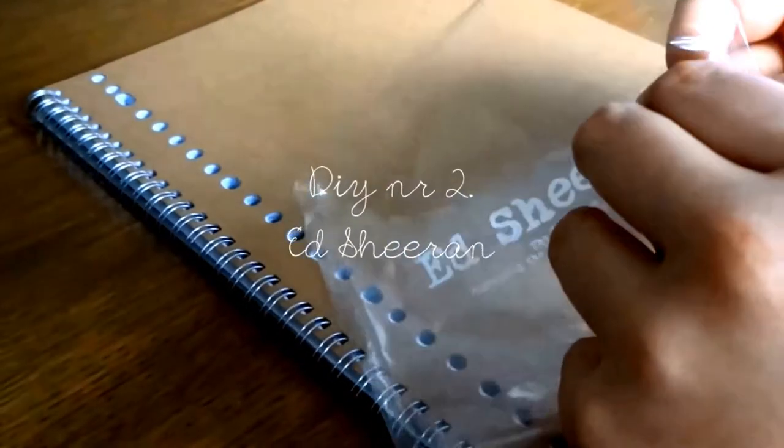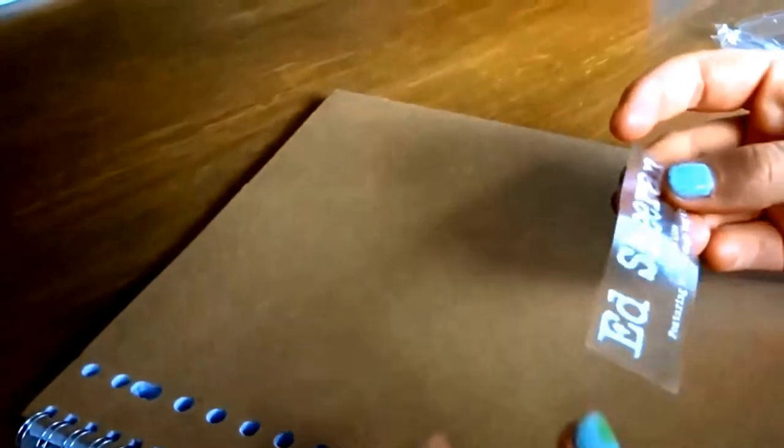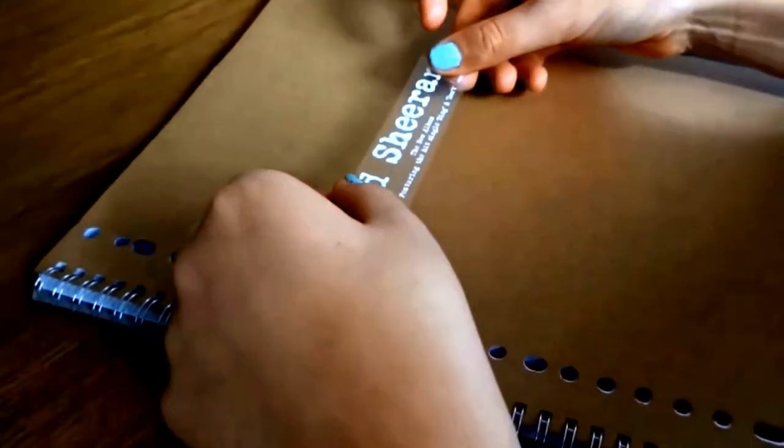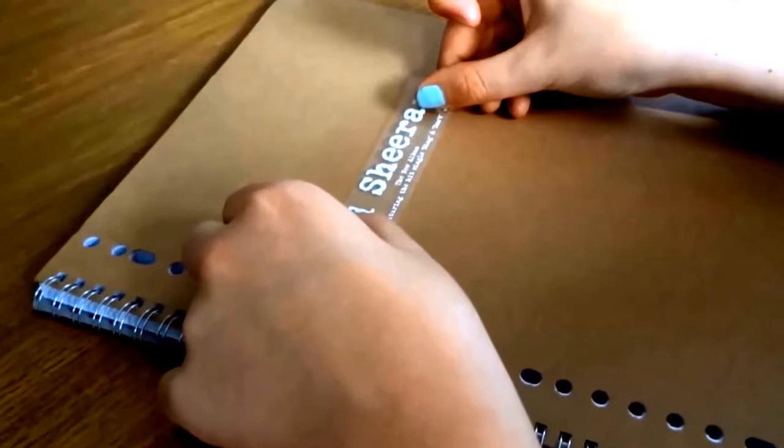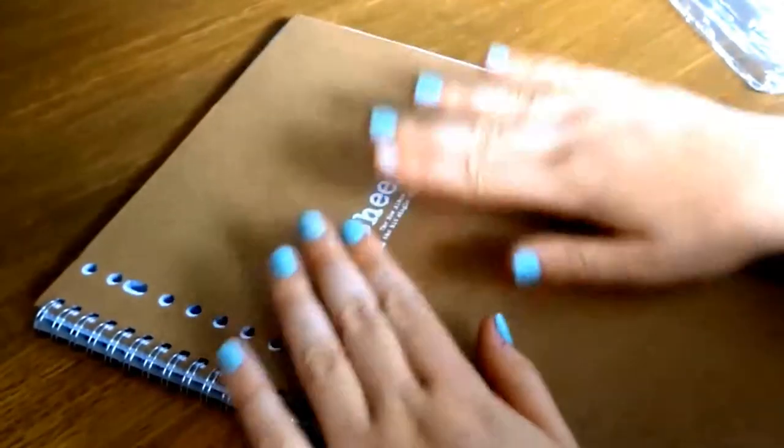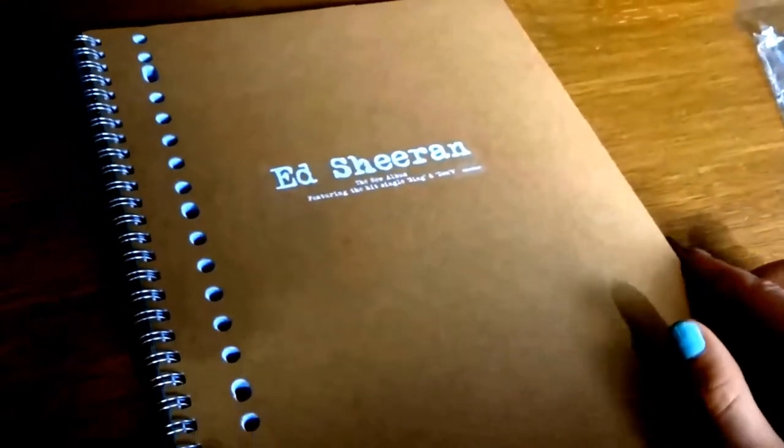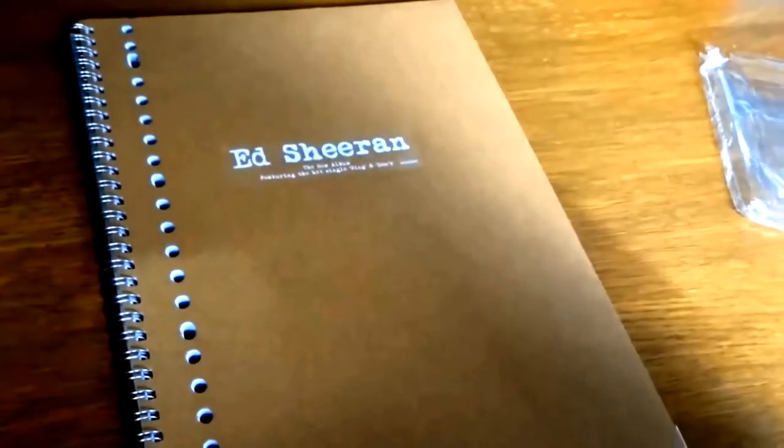The next DIY is an Ed Sheeran inspired one. The only thing you need for this are a notebook and some stickers. I got this Ed Sheeran one from his album X so I decided to use that one, but you can use anything you like. And this is what it looks like. It's really simple but also really nice.